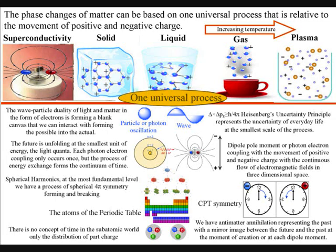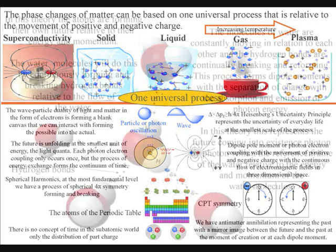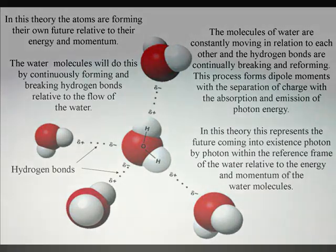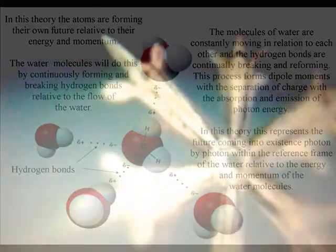A process of spherical symmetry forming and breaking will naturally form entropy or disorganization, with the built-in potential for ever greater symmetry formation. This can be seen in the ability the atoms have to bond together, forming patterns of infinite complexity.